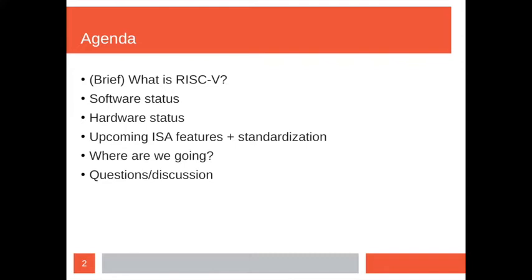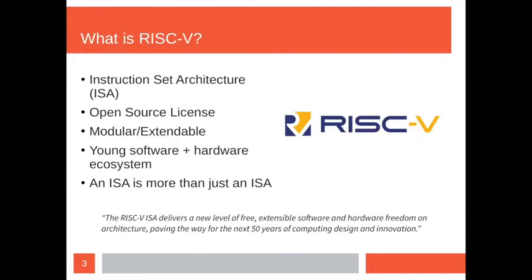Briefly, RISC-V is a CPU architecture, much like x86 or ARM. What's unique about it is that it has an open source license, so you don't need to pay any fees or have any special licensing to implement a RISC-V compatible CPU — anyone can do it.